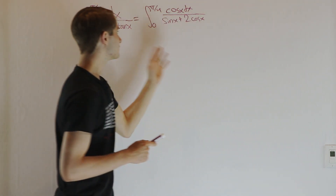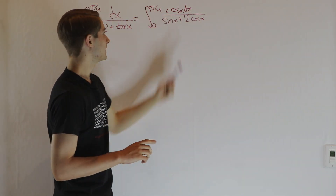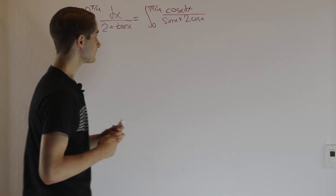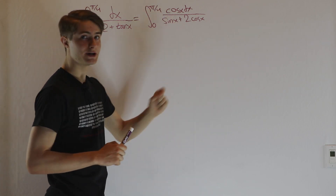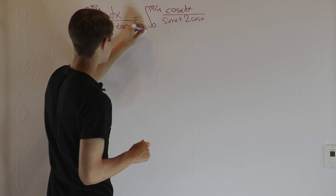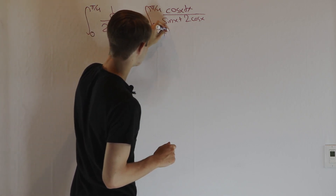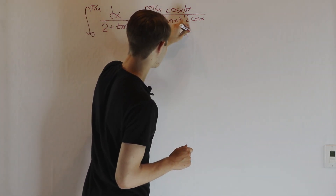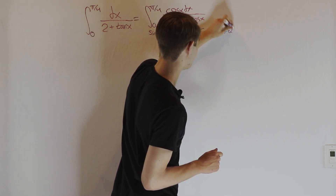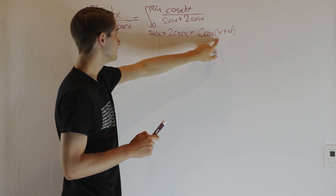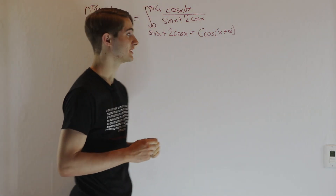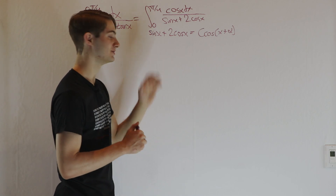There's still not something we can obviously do — we can't substitute sine or cosine because we don't have the right thing in the numerator. But we can look at the bottom. By the harmonic addition theorem, we can write sine x plus 2 cosine x as c·cos(x + α), and that will make the denominator only one thing, which is going to help us do this integral.